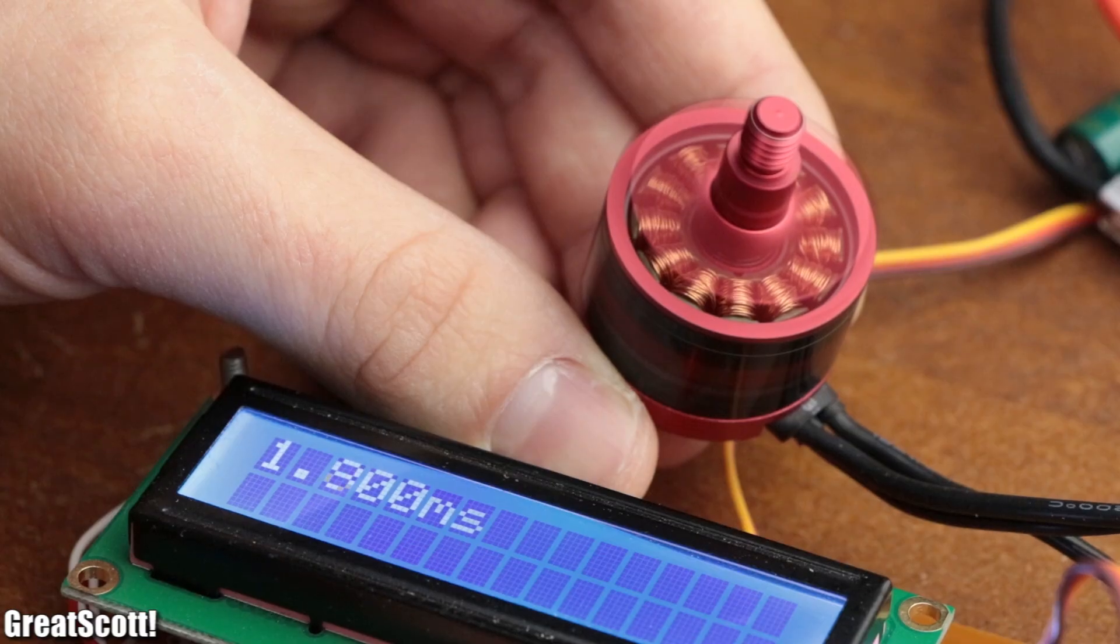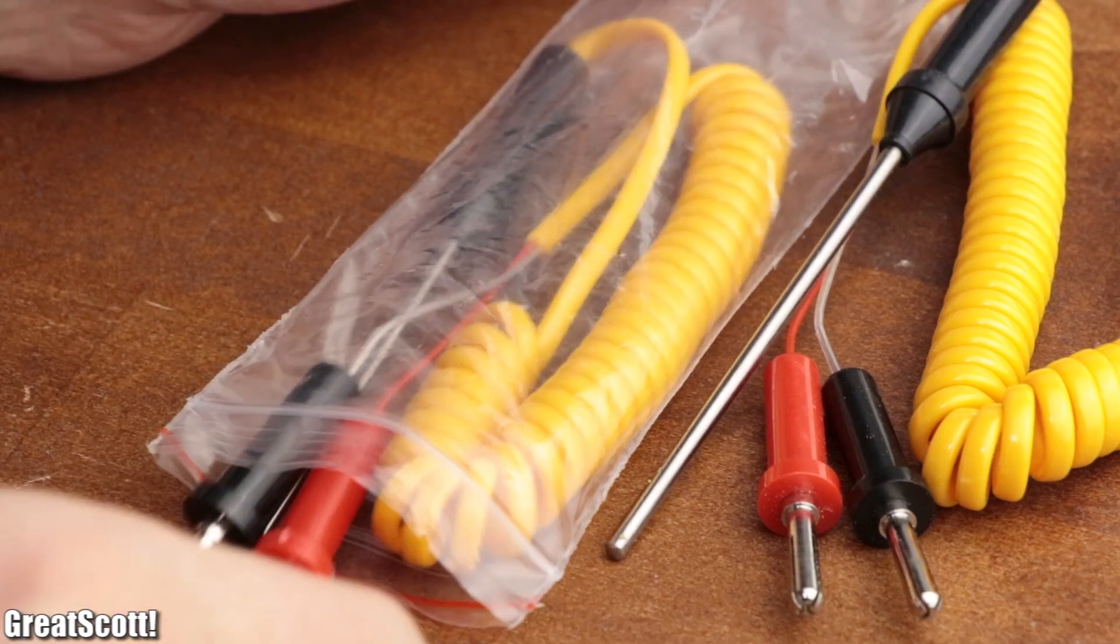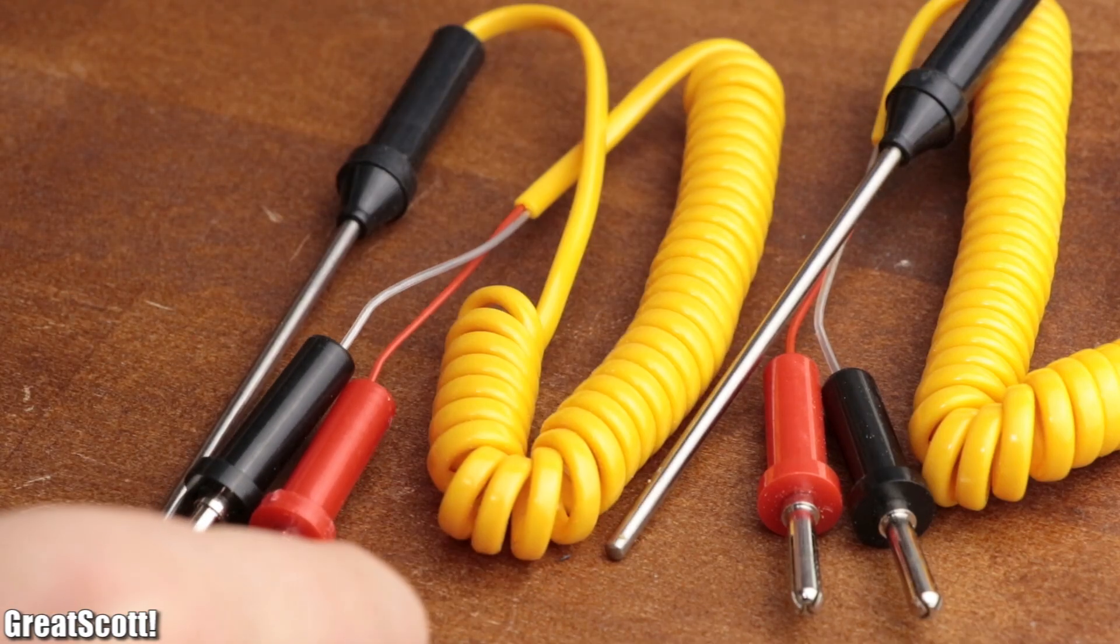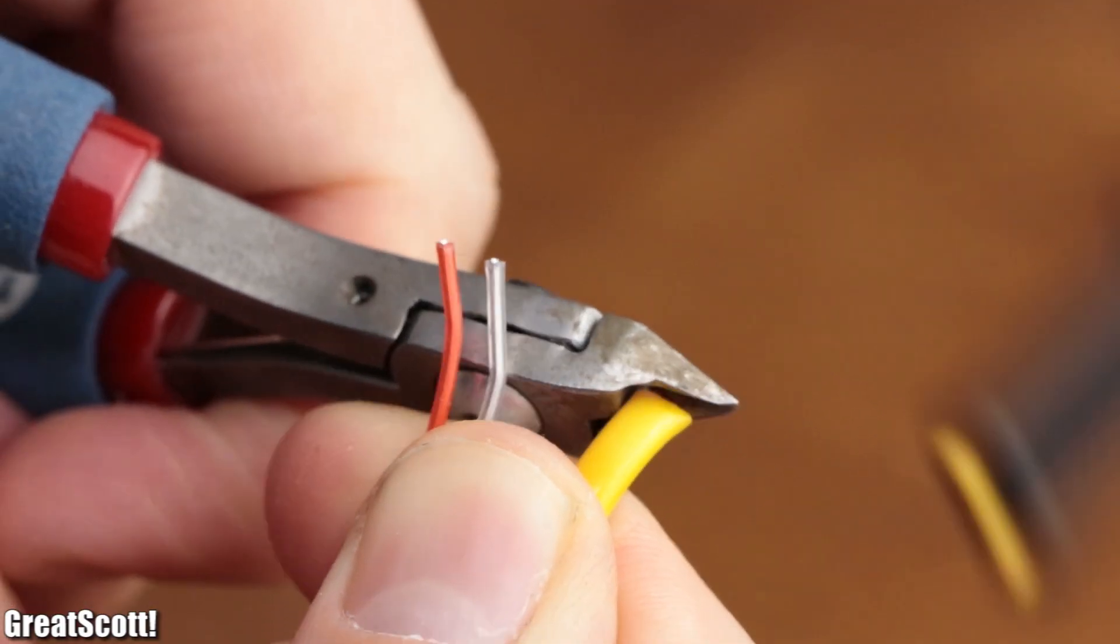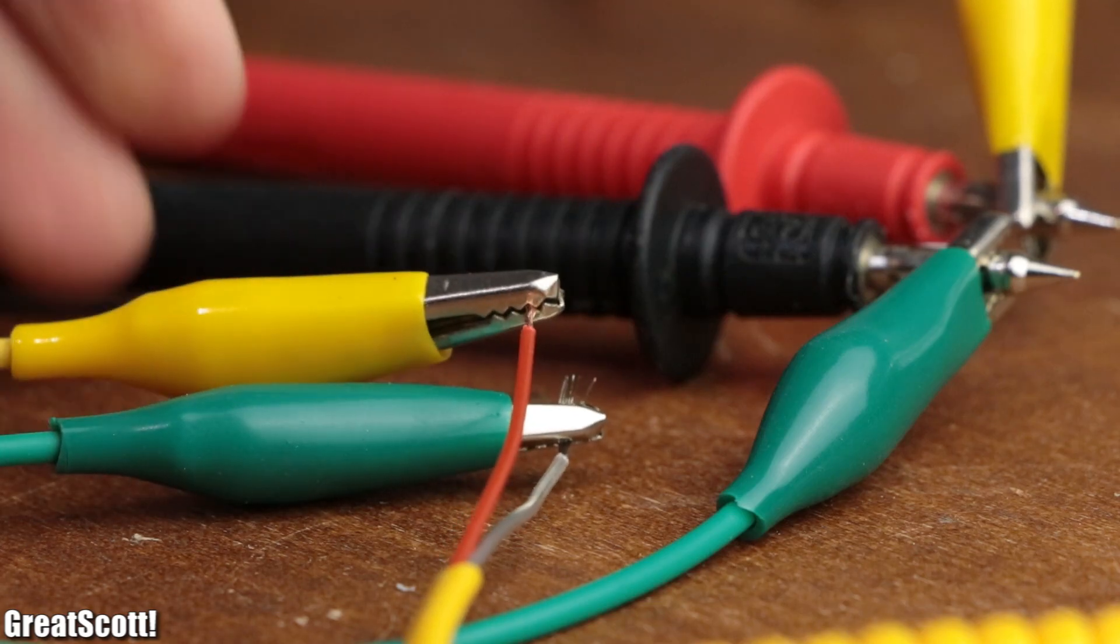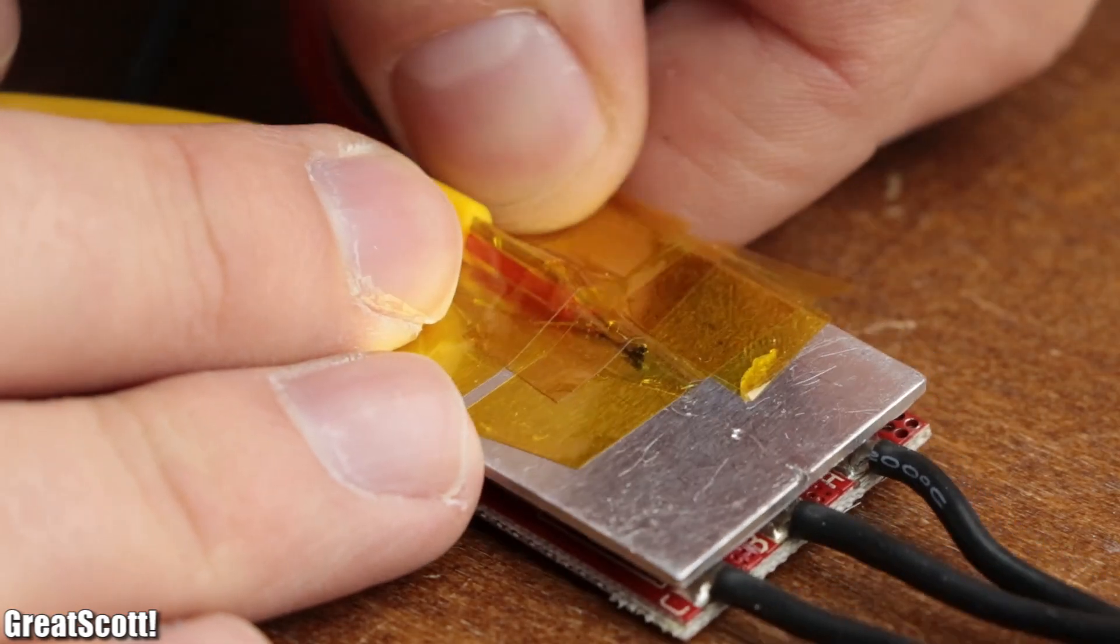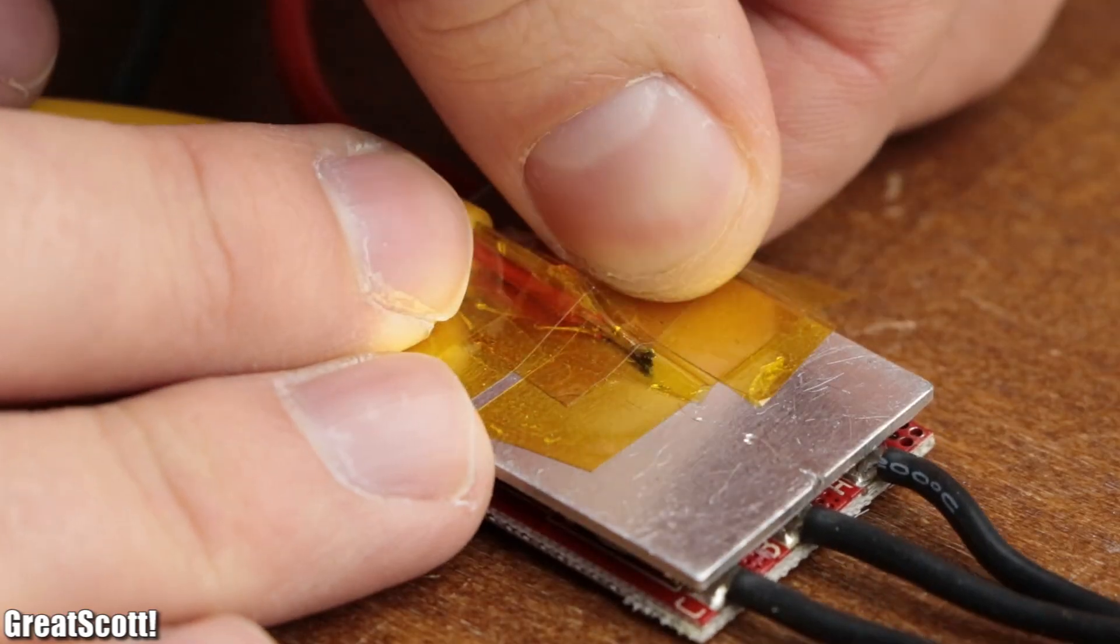So I got myself a few type K thermocouples, which are basically just two metal wires connected together in one point in order to create a voltage difference proportional to the temperature, and secured them to the heat sinks of the ESCs with kapton tape.